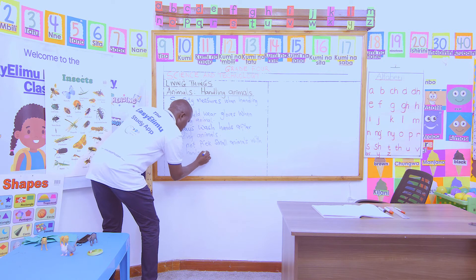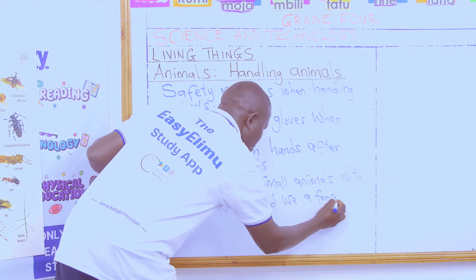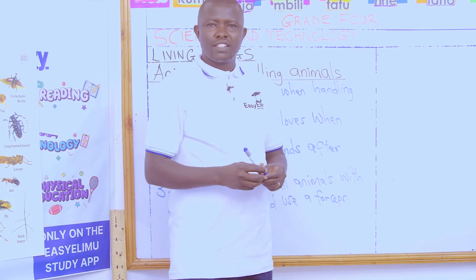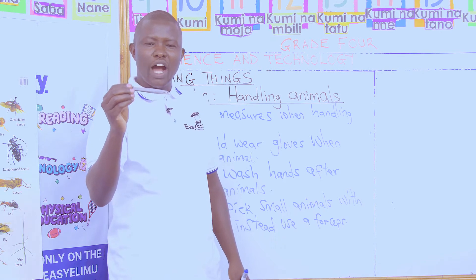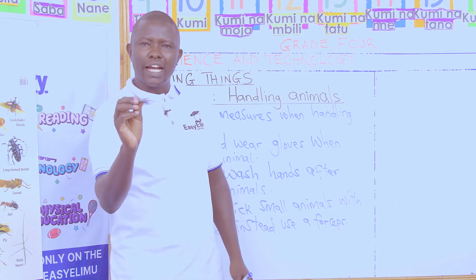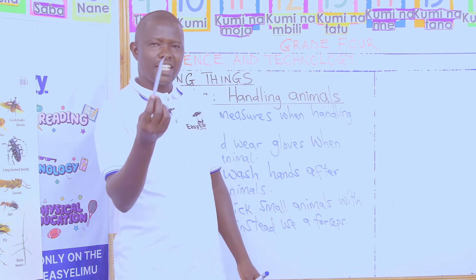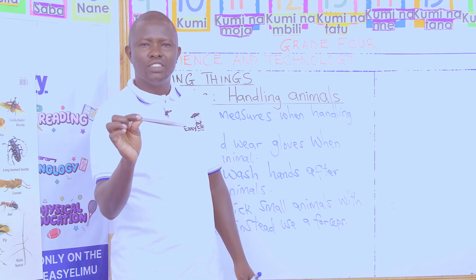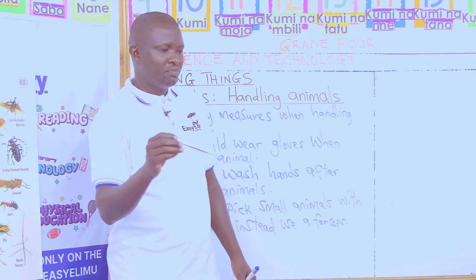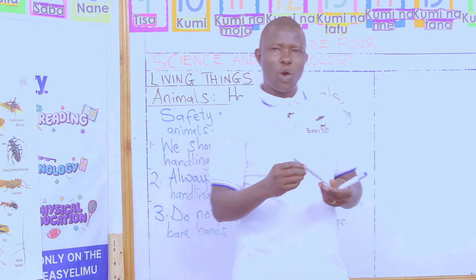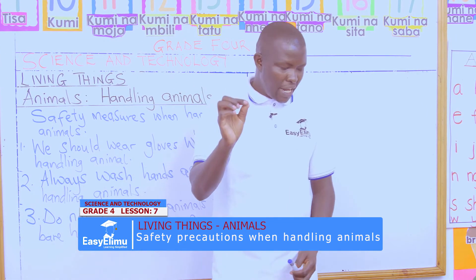Instead, use forceps. A forceps is a device that helps us hold small animals. For example, a spider can sting or bite you, so use the forceps. This is an example of a forceps that can help you hold a small animal — an ant, a spider, or a scorpion. Use the forceps; do not hold them with bare hands.